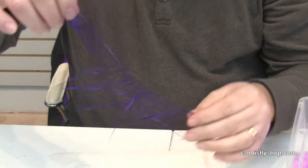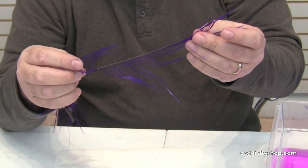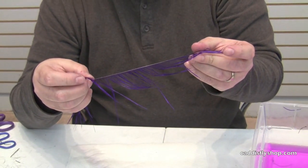And I've just stripped off the whole side. Now you can tie this in at any point for the length you want, wrap it around just like a hackle and you've got Rhea.